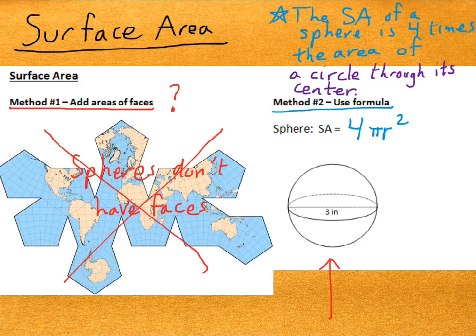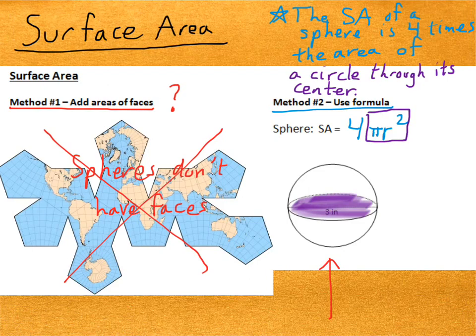See that pi r squared there? That's the area of the circle that goes through the center of the sphere. The surface area of the sphere is 4 times the amount of that area, according to the formula.